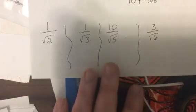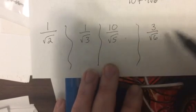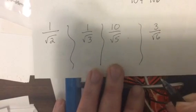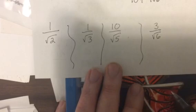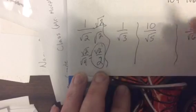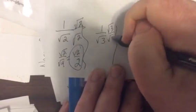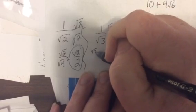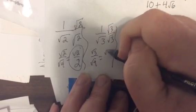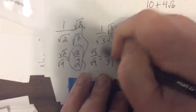These are easy. 2, 3, 5, and 6 do not have a perfect square in them, so you just multiply the top and the bottom by that number. So it'd be square root of 2 over square root of 4, which is square root of 2 over 2. This one would be square root of 3 over square root of 3, so it's square root of 3 over square root of 9, which is square root of 3 over 3.